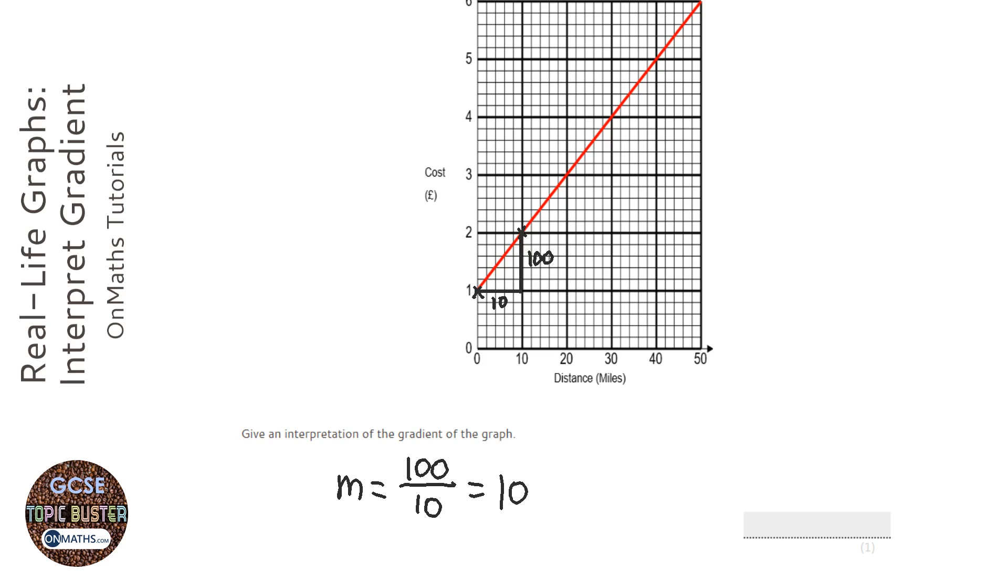Now it says give an interpretation, so we haven't finished answering the question. What does that mean? Well, it means for every one mile that we've gone, it's going to cost 10 pence. Now remember I converted this into pence, so instead of in pounds, it's going to be pence. So the gradient is the cost per mile, and I'm going to put in brackets 10p.